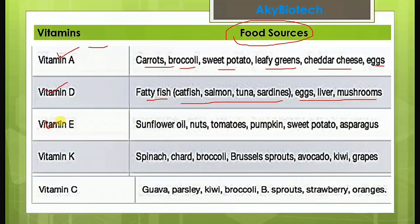Vitamin E is found in sunflower oil, nuts, tomatoes, pumpkin, sweet potato, and asparagus.